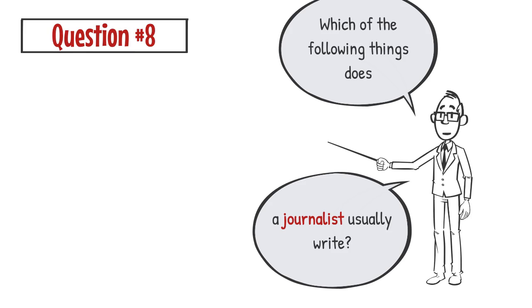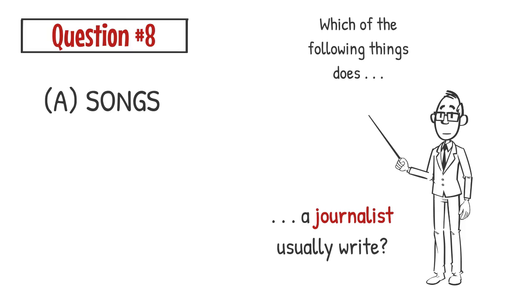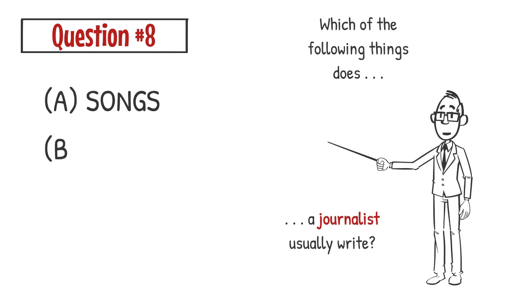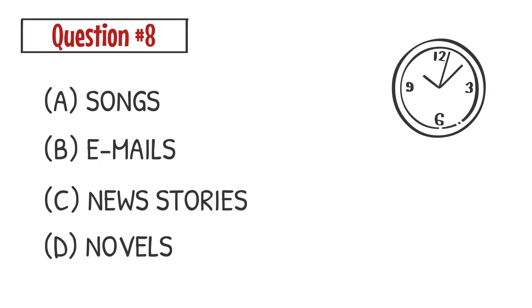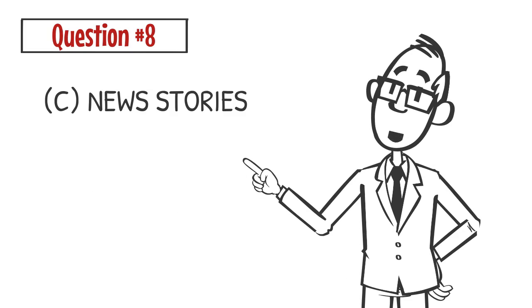Question number 8: Which of the following things does a journalist usually write? A. Songs B. Emails C. News stories D. Novels. The correct answer is C. A journalist usually writes news stories.